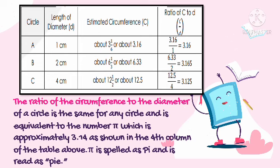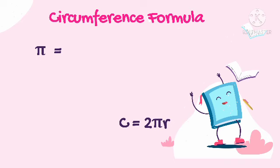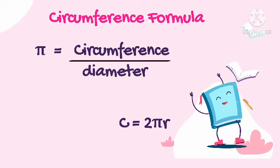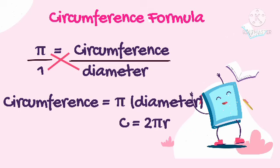We can generate the formula for the circumference of a circle from the ratio between circumference and diameter. Pi is equal to the circumference over the diameter. To generate the circumference formula, we use the cross-multiply method. Adding a denominator of 1, we cross-multiply: 1 times circumference equals circumference, and pi times diameter equals pi times D. So the formula is C = πD, where D stands for the diameter.